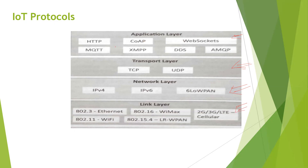In the application layer, there is HTTP, MQTT, CoAP, XMPP, DDS, WebSockets, and AMQP. In the transport layer, there are TCP and UDP. In the network layer, there are IPv4 and IPv6. We also have the 6LoWPAN protocol, which is very useful for IoT applications.